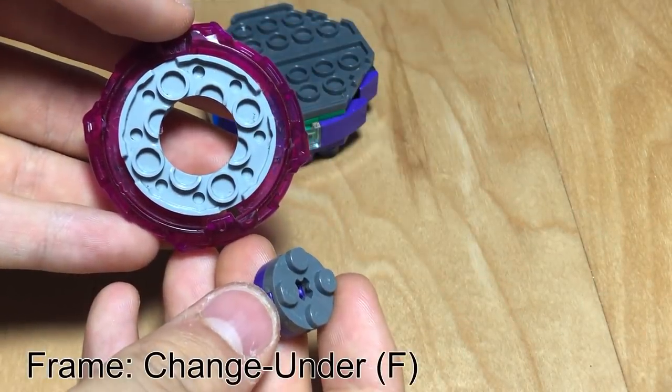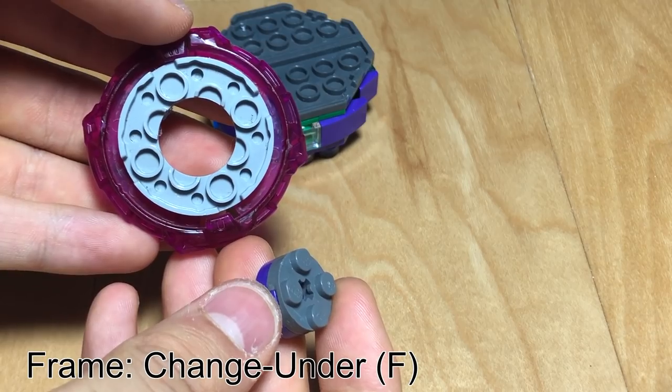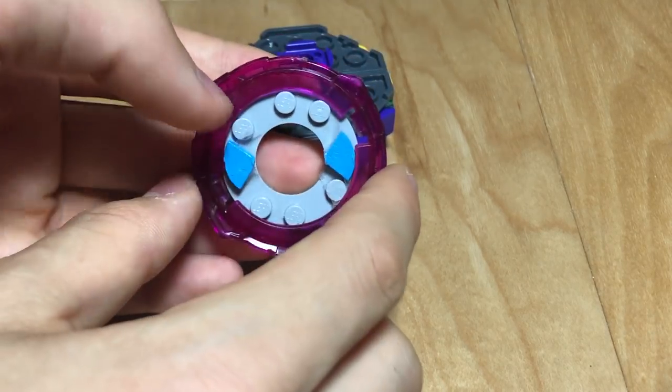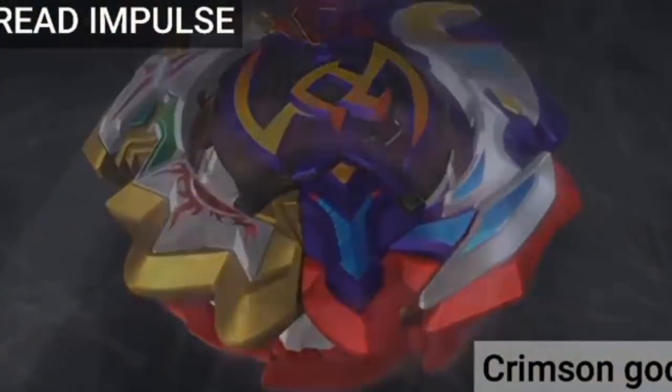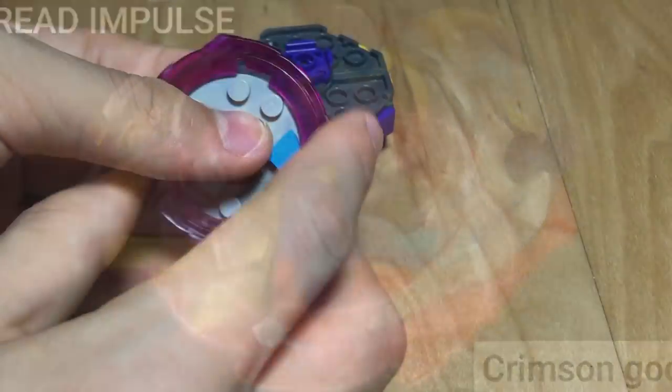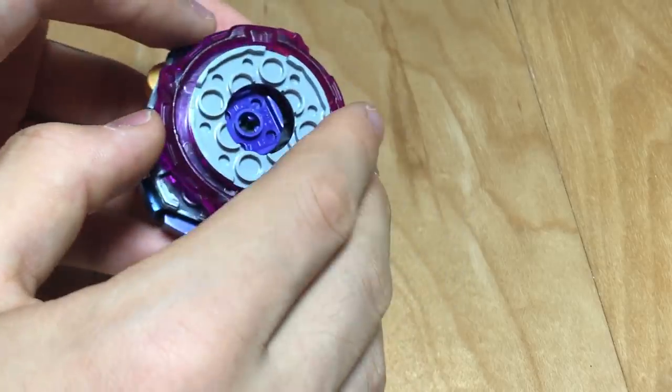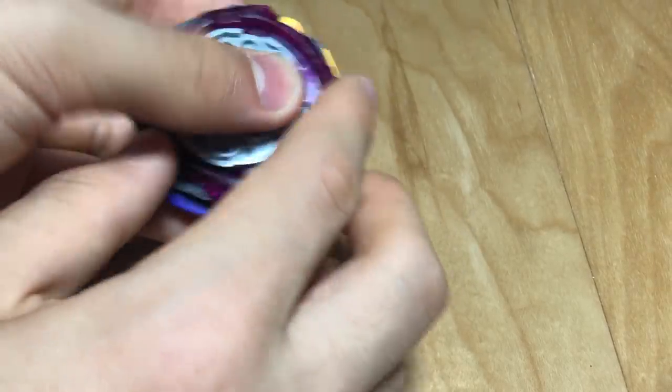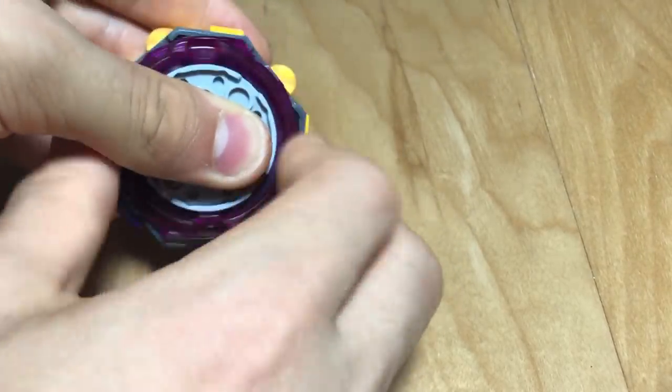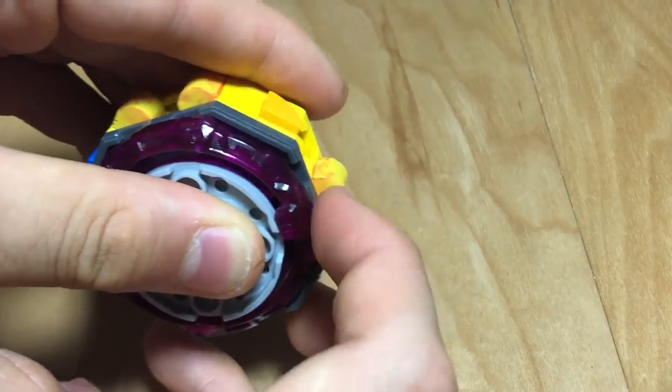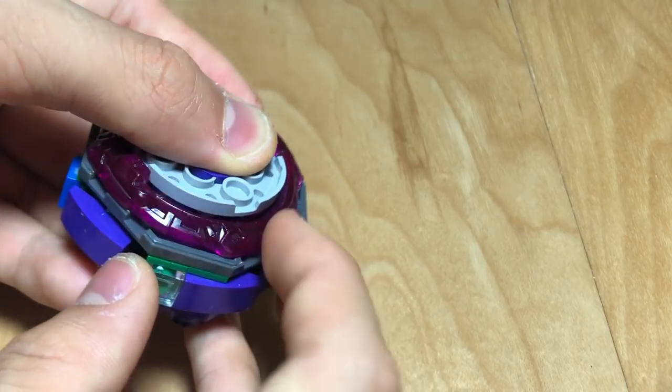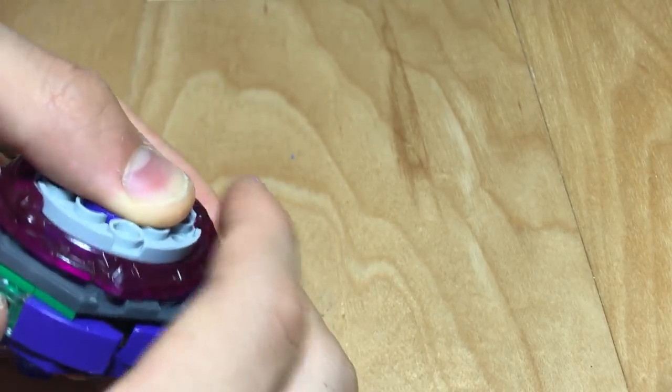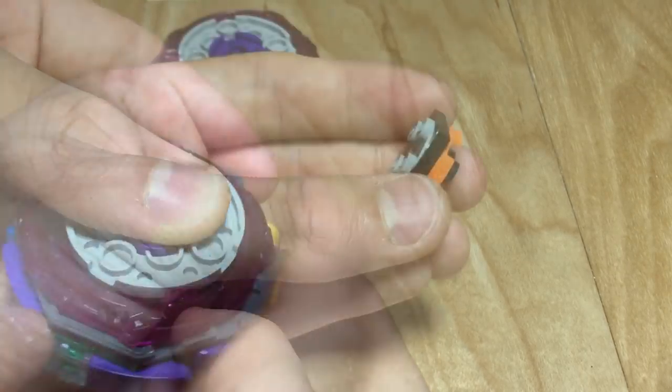The frame is Change Under F, which is basically a makeshift version of the Turn frame. Using a modified version of Change, we are able to free-spin this under frame around here. When you put it under here, notice you can free-spin it pretty easily. Since the under frame was kind of low before, and it flips upside down when you put it in Lego, its slow nature actually helps because now this bottom part is smoother.